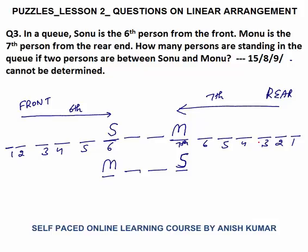How many total persons are there in the queue in the first case? 6 plus 2 in between plus 7 equals 15. So in the first arrangement, the answer could be 15 — there are 15 persons standing in the queue.